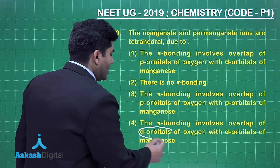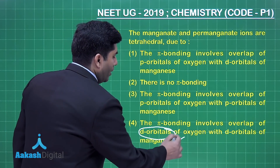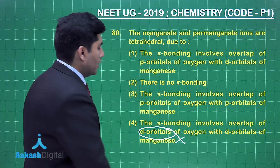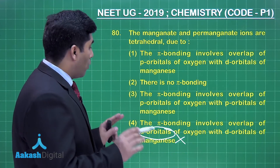D orbitals are not present in oxygen, so option four is wrong.